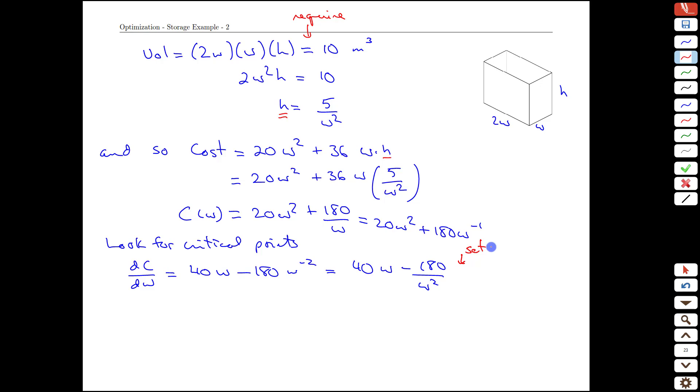Then we set it equal to 0 for critical points. The derivative is not always equal to 0, but we want to find the points where it is because that is going to be one of the candidate optimum points where the critical point is located or where the derivative equals 0. That means we need to solve for w at this point. We can reshuffle this to be 40w equals 180 over w squared positive now because we moved it to the right-hand side.